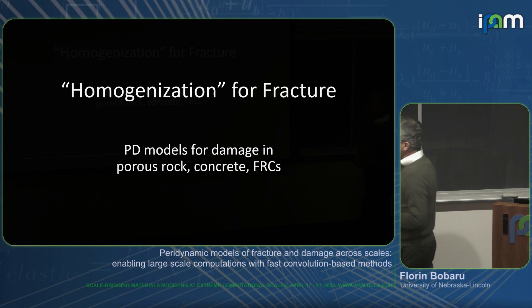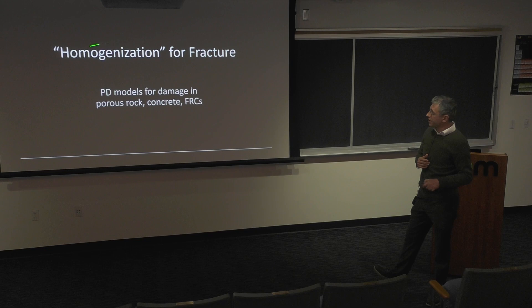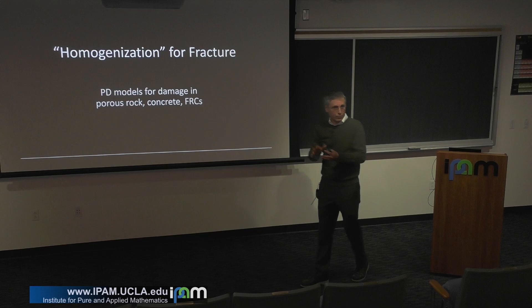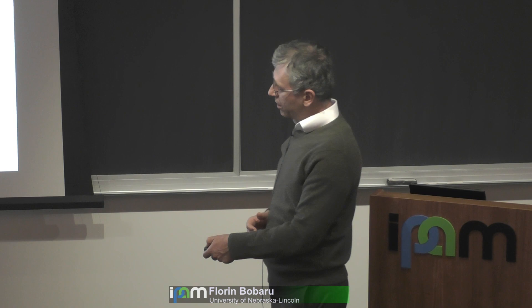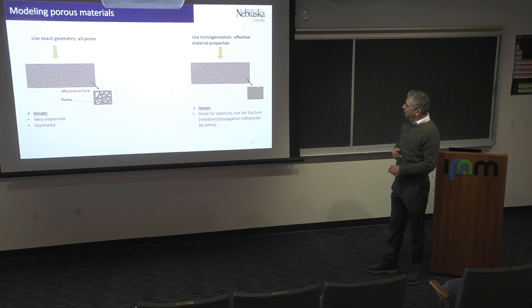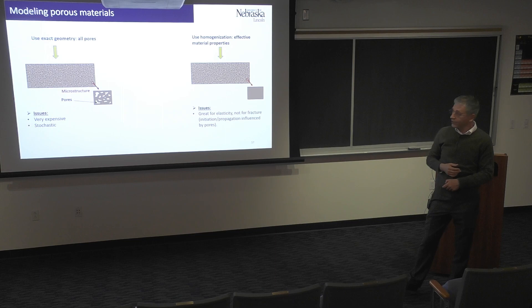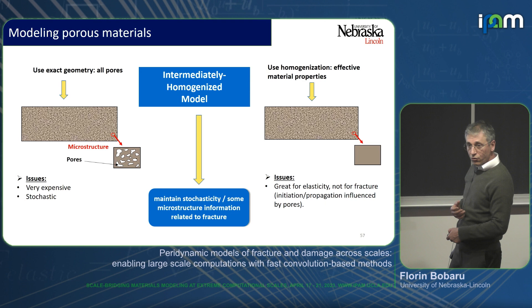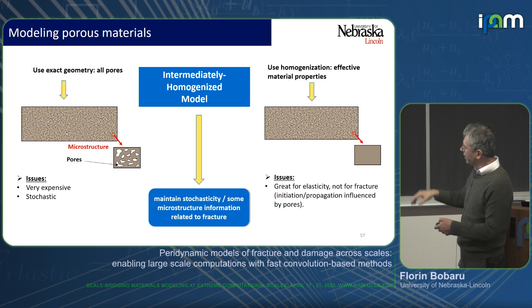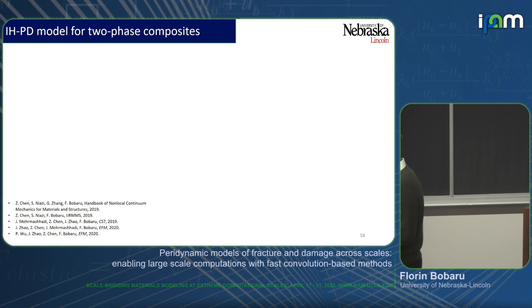Homogenization is important because these explicit microstructure computations are expensive — I had to shrink that sample significantly. Rather than modeling the detailed microstructure, could I homogenize — make everything a paste? That's great for elasticity but doesn't really work for fracture. Is there something in between? Yes — stochastic homogenization. I keep some relevant information from the microstructure, for example the porosity of the rock, but not all.